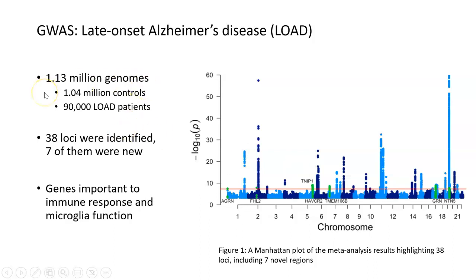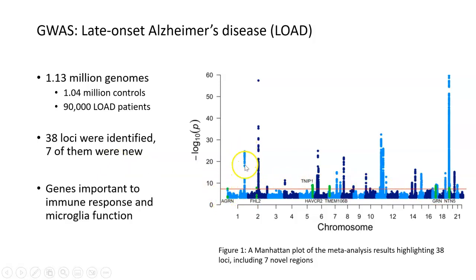In a recent study, over a million control genomes were compared to almost 100,000 patient genomes from people with late-onset Alzheimer's disease. Through this GWAS, 38 new loci or genetic locations were identified, seven of which were previously unknown. You can actually see the Manhattan plot from the study here — everywhere you see these high vertical peaks of dots, those are locations of SNPs that are different between people who have late-onset Alzheimer's and people who don't.